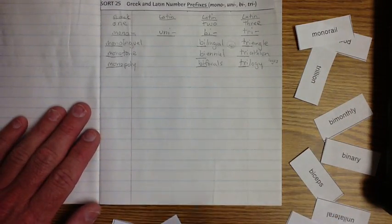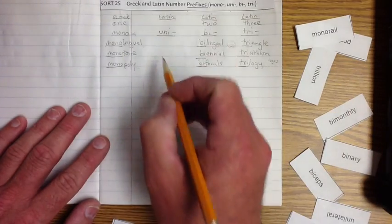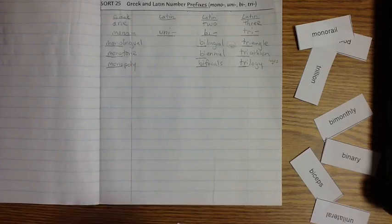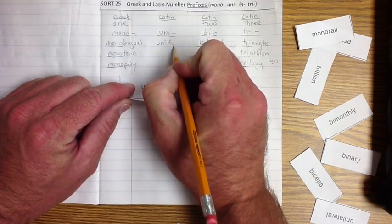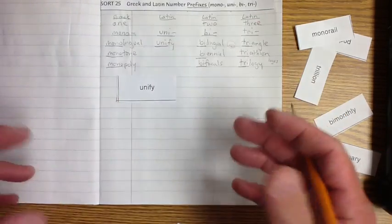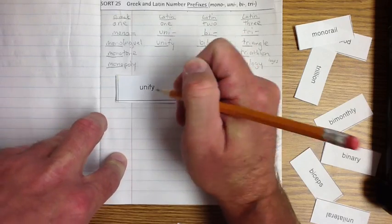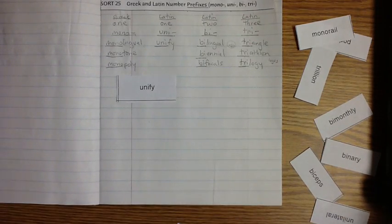Now, we've got these ones. And you're going to have to finish all these. But we've got one more. We've got this uni here. So we're going to do this word right here. Unify. To unify means to bring together as one. One. So in Latin, uni means one. To unify. Bring it together. One. Got it?